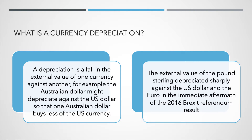Currency depreciation is when the external value of one currency falls against another. The Australian dollar, for example, might fall against the US dollar or against the Chinese Yuan, so that one Australian dollar buys less of the United States currency or less Yuan. A good example of depreciation, which happens in a floating exchange rate system, was the external value of the pound falling quite sharply by more than 15% against the US dollar and the euro in the immediate reaction to the 2016 Brexit referendum result.